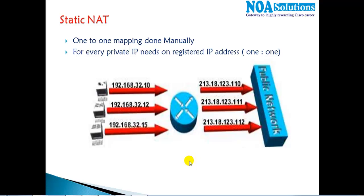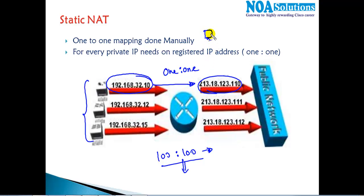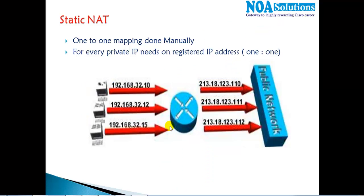In this video we'll see how to configure static NAT. To review the basics from the previous video, static NAT is a one-to-one mapping method where each private IP address is mapped with one registered public IP address. This mapping is done manually by the administrator. The major drawback is we need a one-to-one ratio, so if you have 100 users who want to access the internet, we need 100 public IP addresses. It's more commonly used for hosting servers on the internet - for example, if you have a web server in the LAN and want to host it on the internet.